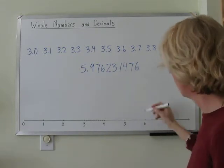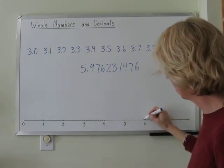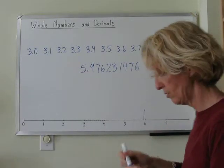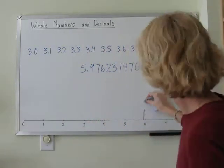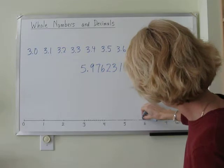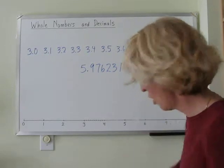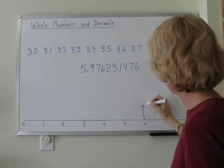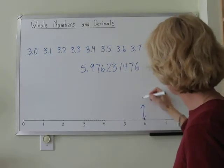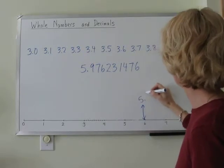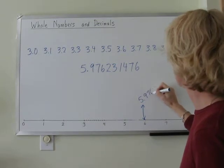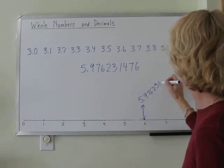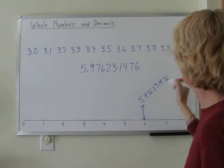But we can still find the location of this number on the number line. Now 5.97 is going to be very, very close to 6. Maybe even closer than that. Let's move it over. We're going to be almost, almost, almost at the whole number of 6. And that position of the number line is going to be 5.976231476.